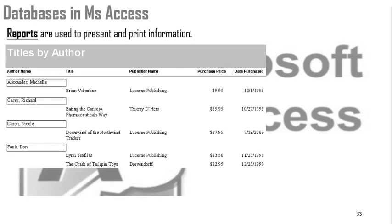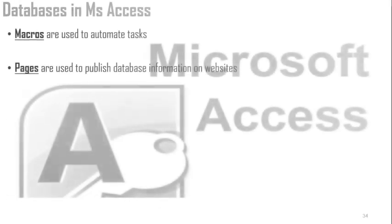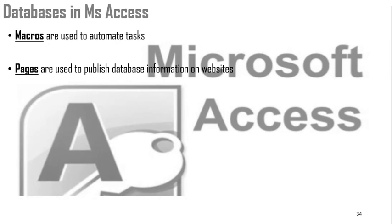A report — what about reports? Reports are used to present and print information. This is a sample report; it can be edited and redesigned to look better. In Access, we also have objects called macros, which are used to automate repetitive tasks and enable you to automate tasks without knowing Microsoft Visual Basic. Pages are used to publish database information on websites.